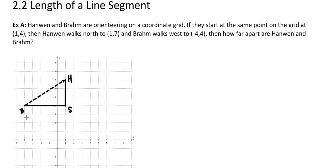You can see that I've just formed a right-angled triangle, so I can use this information to help me out. We know that this is at (1,4), and this is at (1,7), so that tells us that this distance is 3.